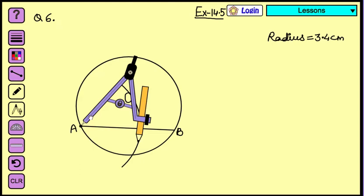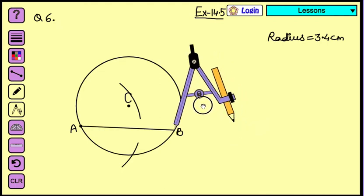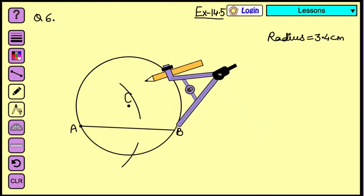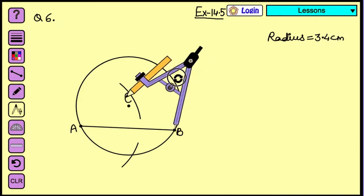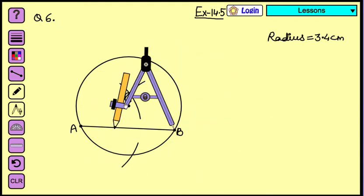Now we are going to place this needle of the compass on B. And again we are going to draw the arc which is going to cut the previous arcs which we have already made. Let's see where they are going to cut. So on one side, now on the other side.